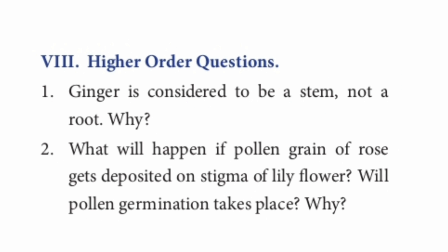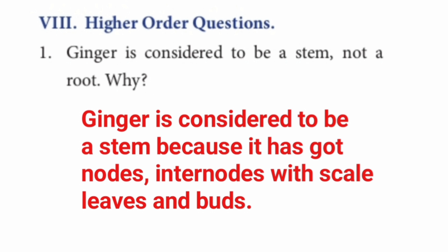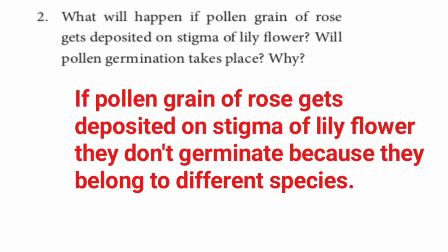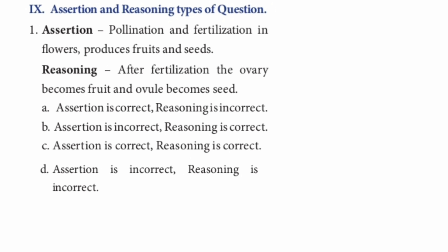Roman numeral VIII: Higher order questions. Question 1: Ginger is considered to be a stem, not a root. Why? Answer: Ginger is considered to be a stem because it has nodes and internodes with scale leaves and buds. Question 2: What will happen if a pollen grain of rose gets deposited on the stigma of a lily flower? Will pollen germination take place? Why? If pollen grain of rose gets deposited on the stigma of lily flower, they don't germinate because they belong to different species.